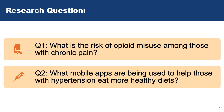For this course we'll do two questions. One to show you the quick and dirty search and the other to show you the more systematic, comprehensive search. Our first question is: what is the risk of opioid misuse among those with chronic pain?